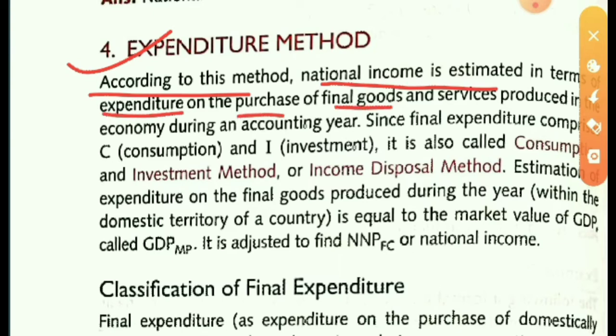According to the expenditure method, the national income is estimated in terms of expenditure on the purchase of final goods and services produced in the economy during an accounting year. Whatever expenditure is made to purchase goods and services — like biscuits or other consumer goods — that expenditure is used to calculate national income.